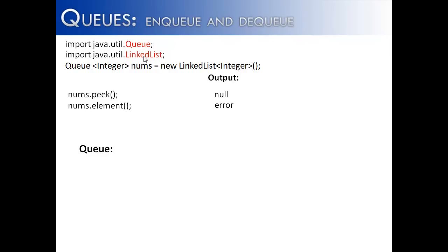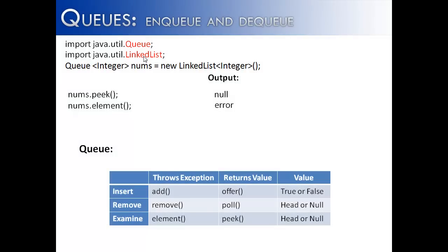just like remove would throw an error if there wasn't anything inside of the queue. Here is a short table to show the difference between this returns a value and this would throw an exception.